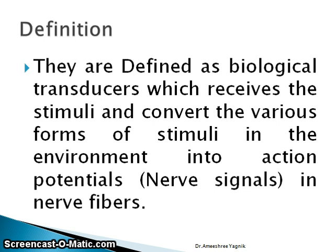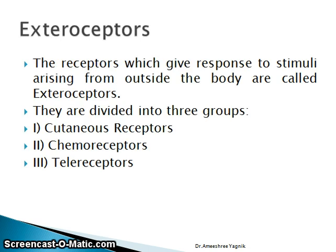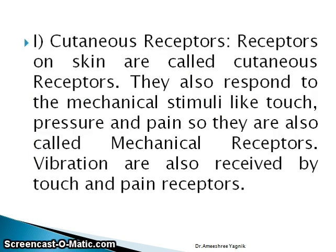Classification of receptors: receptors are classified into two types — exteroceptors and interoceptors. Exteroceptors are the receptors which give response to stimuli arising from outside the body. They are divided into three groups: cutaneous receptors (related to skin), chemoreceptors (chemical receptors), and teleceptors (receptors responding to stimuli from a distance away from the body).